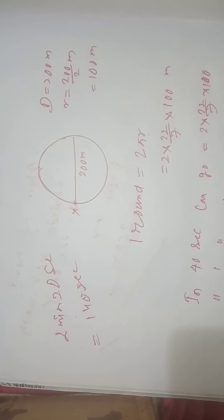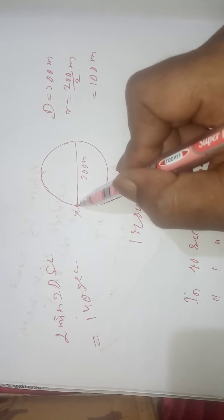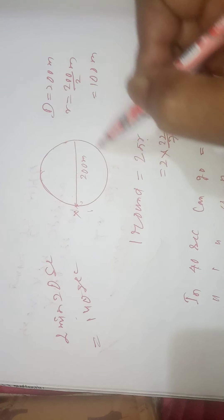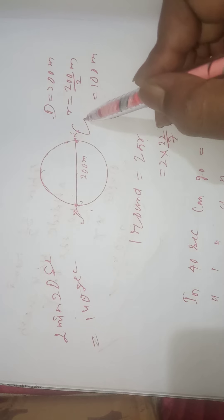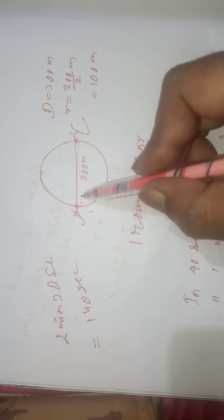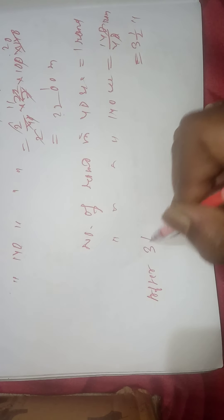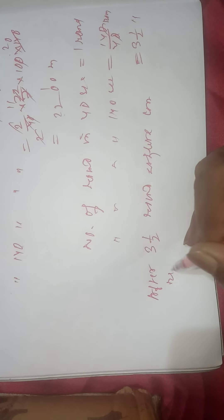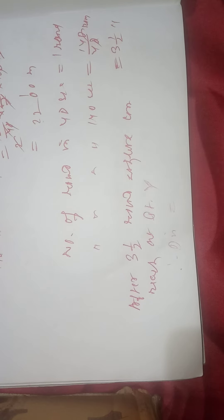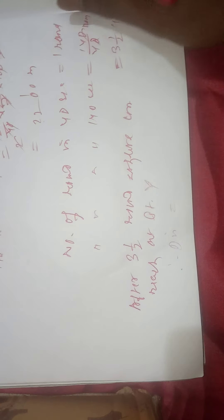The athlete completes 3 and a half rounds. Starting from point X — after 1 round, 2 rounds, 3 rounds, and then a half round — the athlete reaches point Y, which is the diametrically opposite point. The initial position is X and the final position is Y. The straight line joining them is the displacement, which equals the diameter. So displacement equals 200 meters.